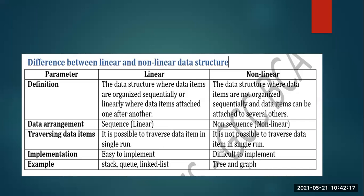Let us look at the third difference especially — the first two definitions are clear, second is also fine. The third one is about traversing the data items. Let us take the example of stack, queues, and linked list — if you have a loop, you iterate and are able to travel through the elements one behind another, just like arrays.